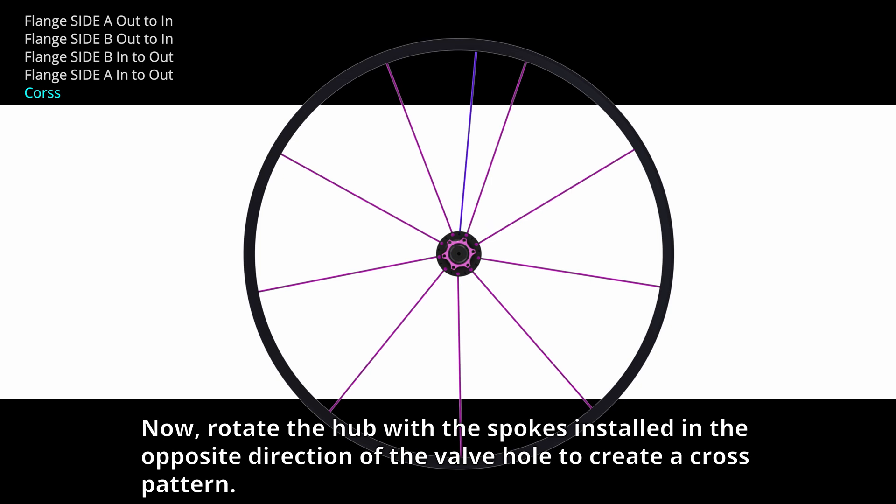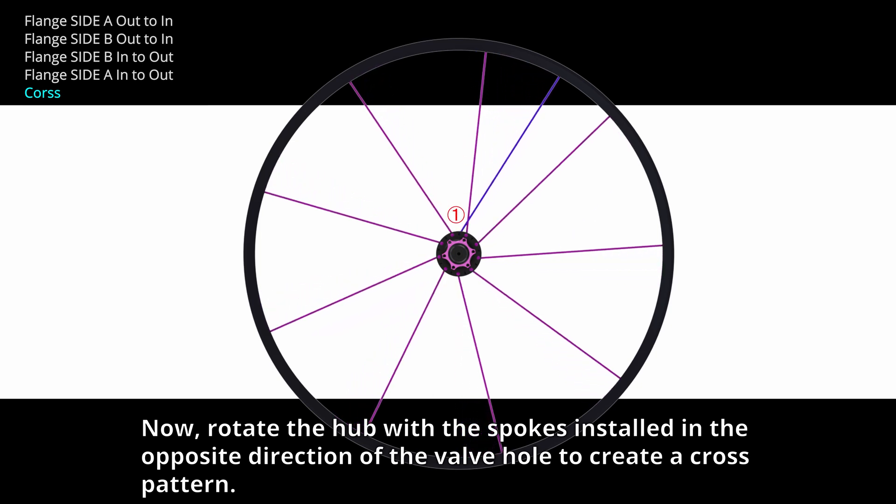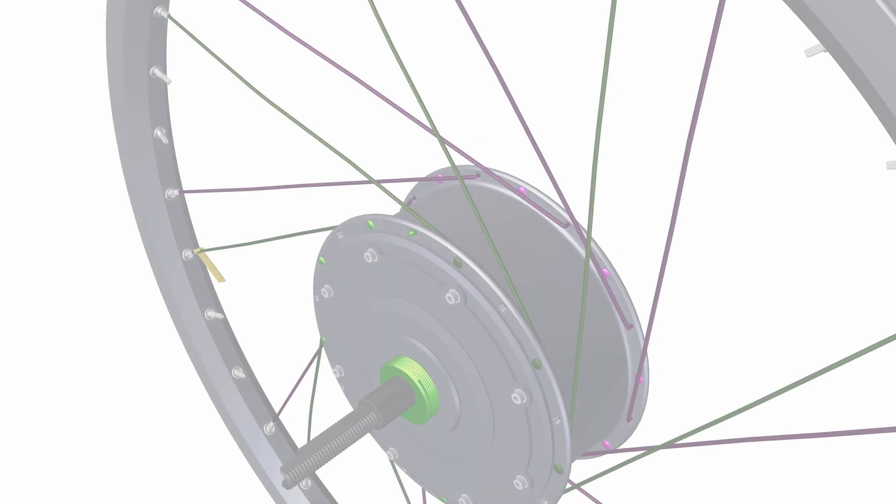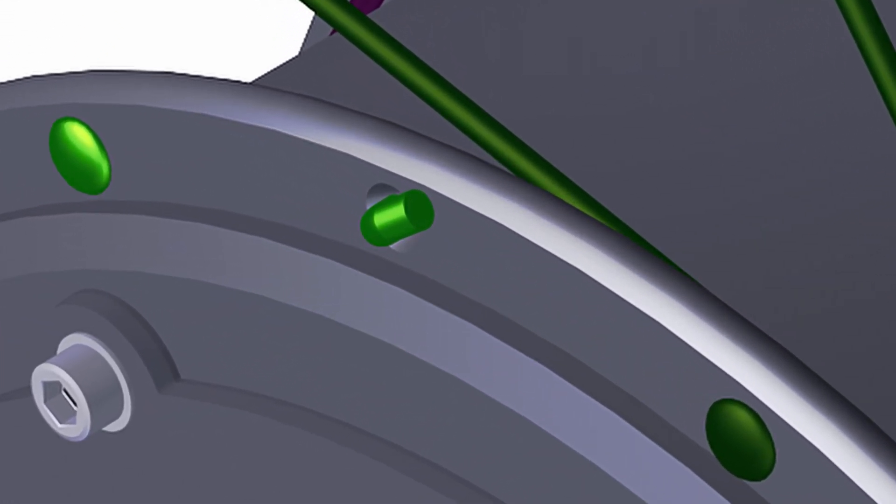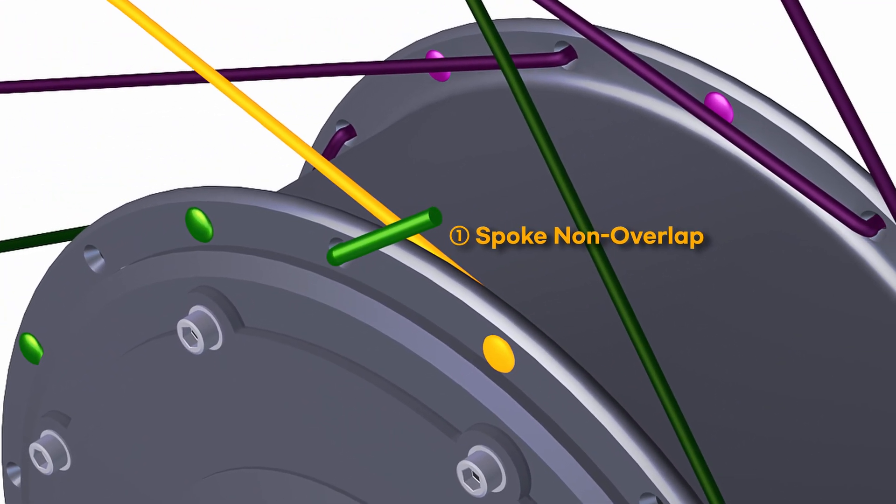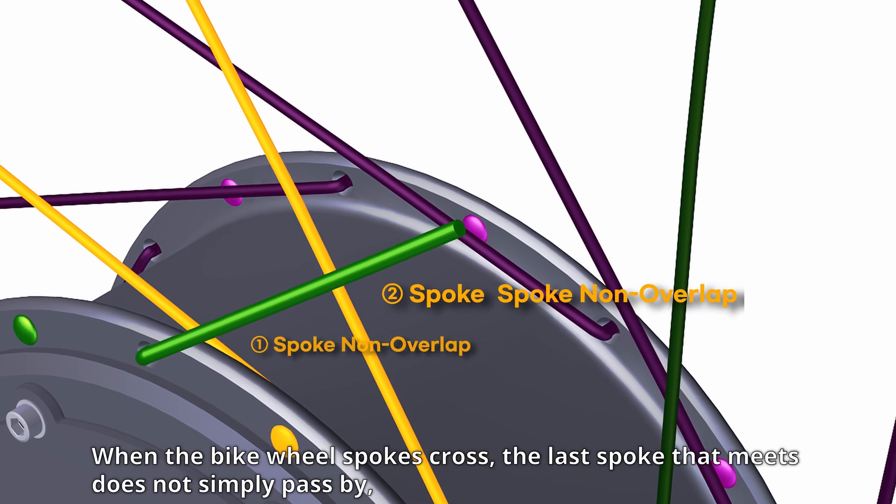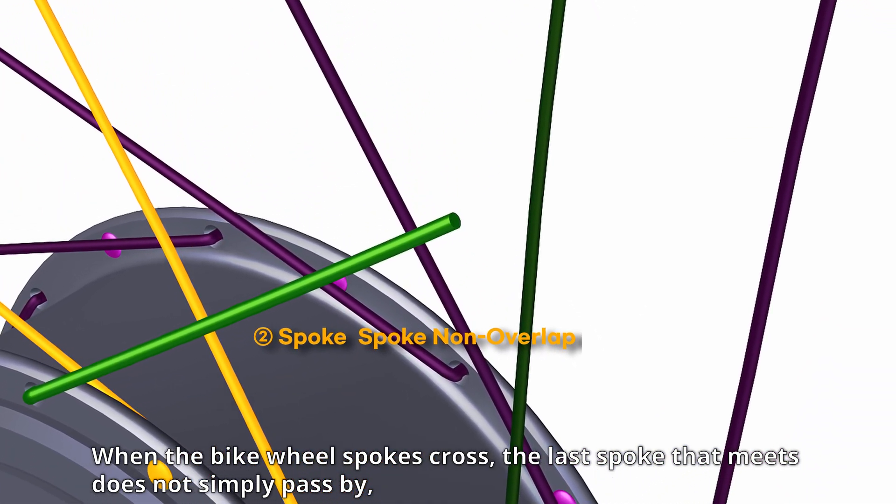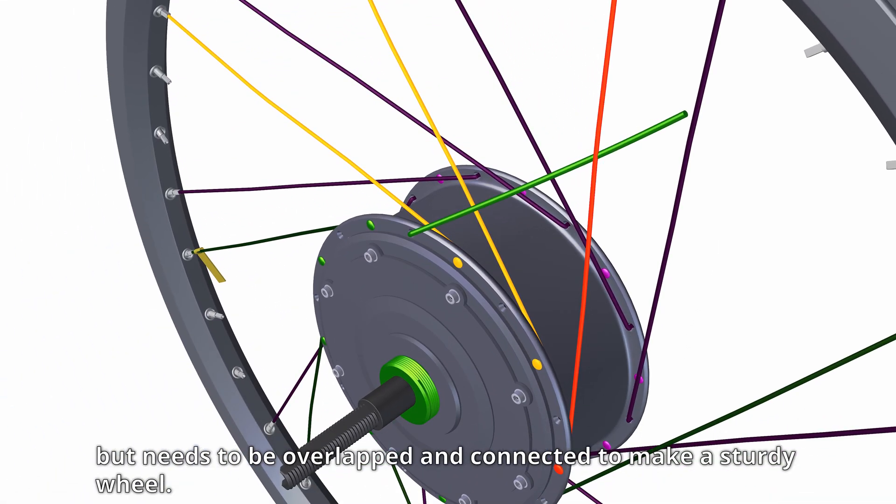Now, rotate the hub with the spokes installed in the opposite direction of the valve hole to create a cross pattern. When the bike wheel spokes cross, the last spoke that meets does not simply pass by, but needs to be overlapped and connected to make a sturdy wheel.